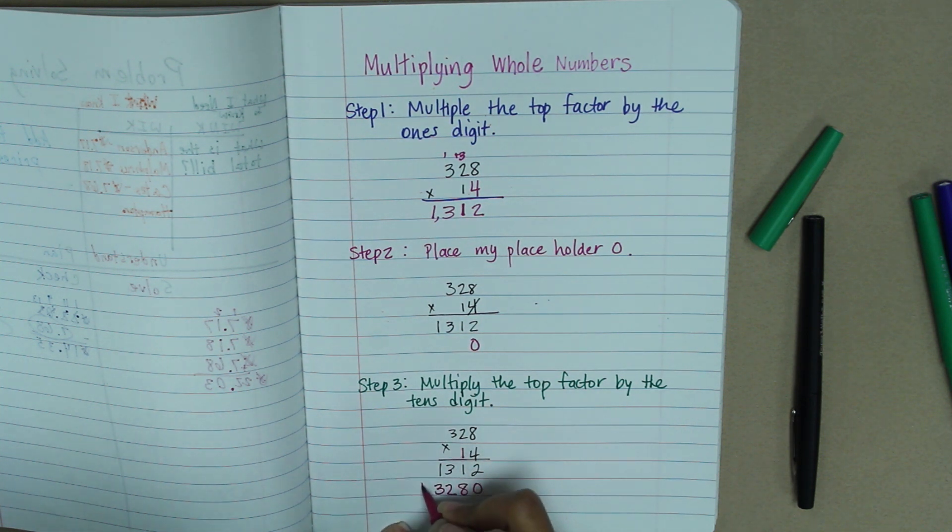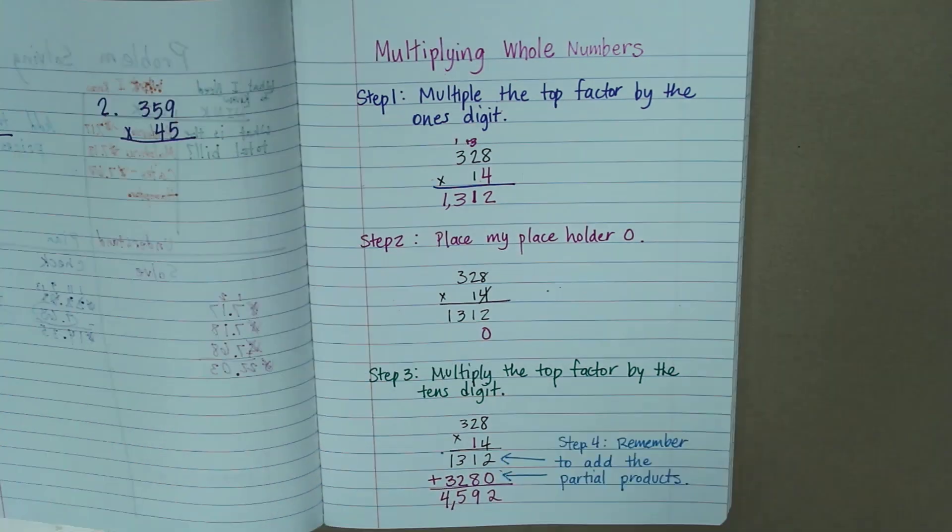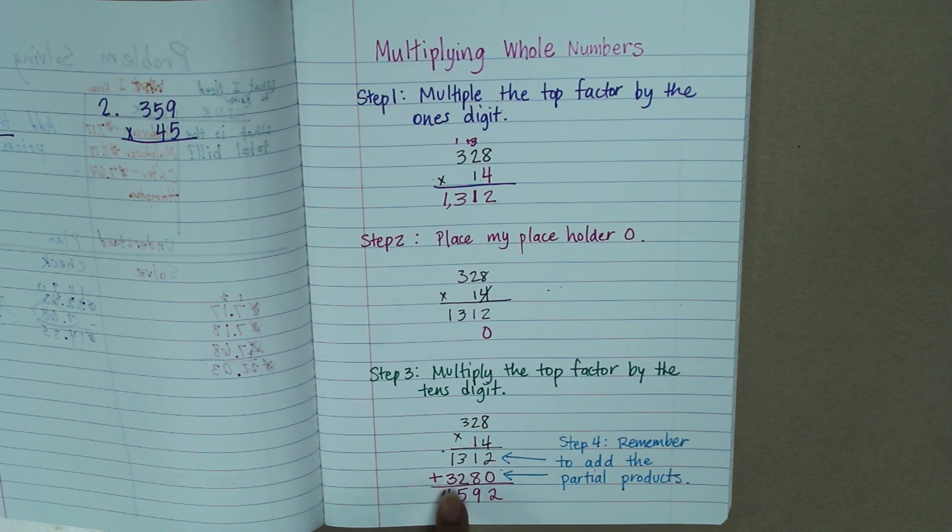And my final step is to add both of my partial products. If you look at this answer, this is the product when I multiplied my factors by 1, and this is my product of the multiplication of my factors by the 10. I add them all together and it gives me my final answer. And remember boys and girls, step 4, remember to add your partial products to give you your final total.